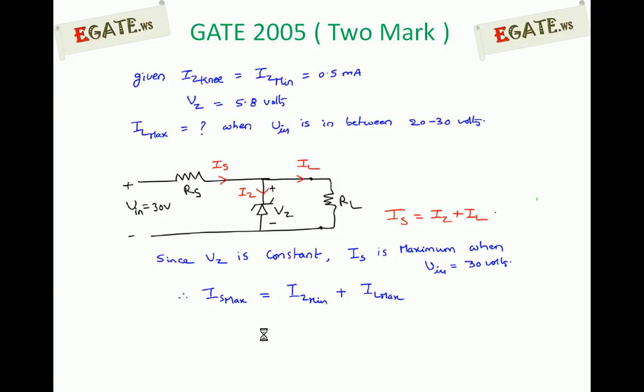For the given zener voltage regulator circuit we are indicating the current directions. Look at this one. Iz current flowing through zener diode. Since the zener diode is under zener breakdown region which occurs under reverse bias, that current always flows from N to P. The direction is going to be as shown, it is from N to P. Iz is shown in this way. Next, load current is flowing towards RL, that is IL. And Is is nothing but source current which is coming from the input side.